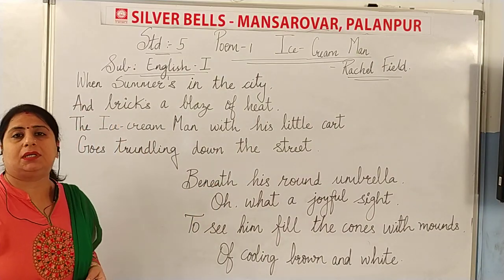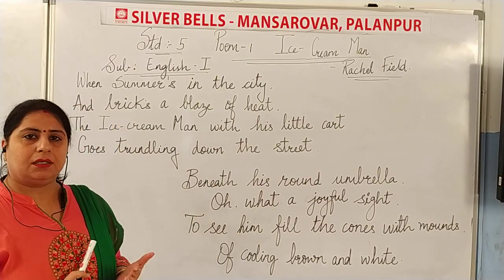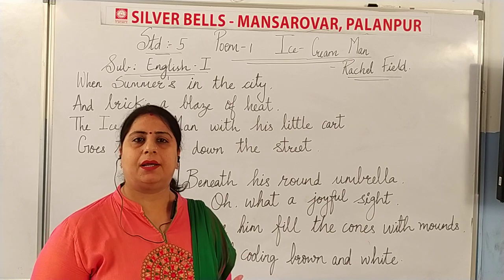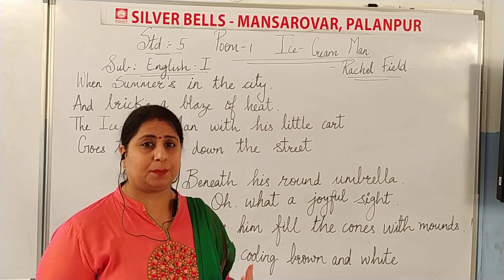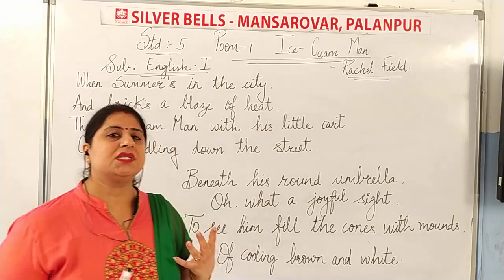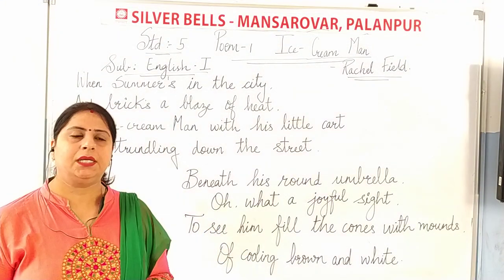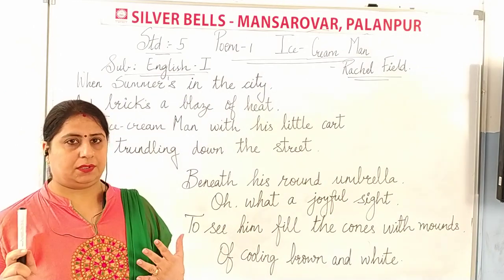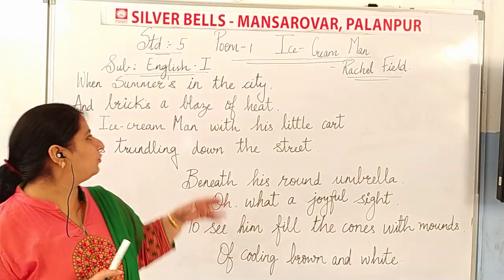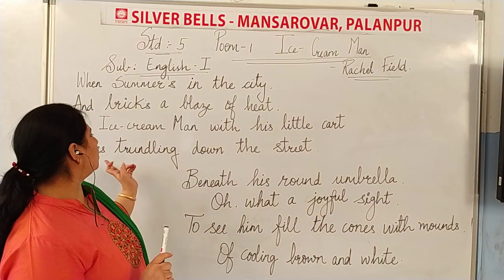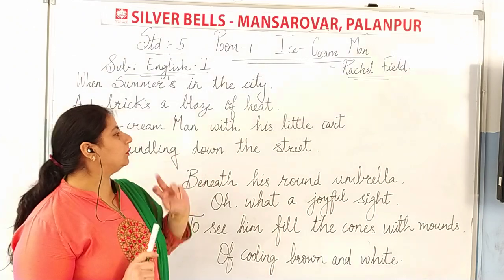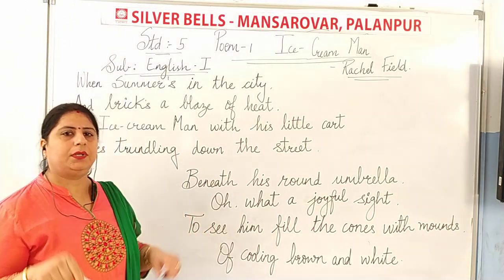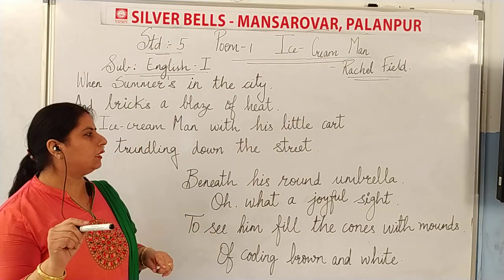When someone was in the city, when the city is very hot, the whole house is very hot — the walls, the roof. Then the ice cream man comes to buy ice cream. The goes trending down the street means he takes his own cart and goes around.